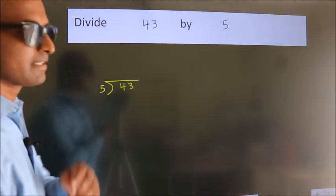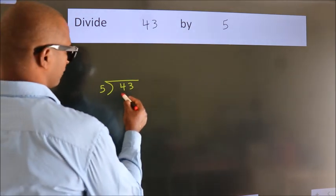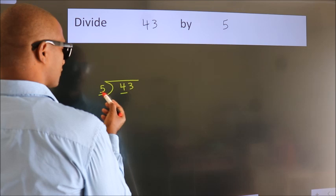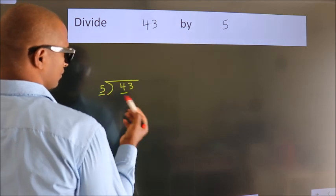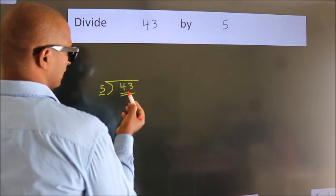Next. Here we have 4. Here 5. 4 is smaller than 5, so we should take two numbers: 43.